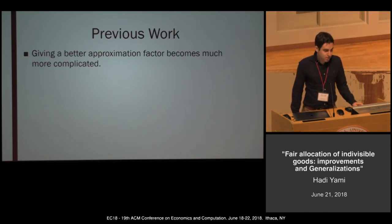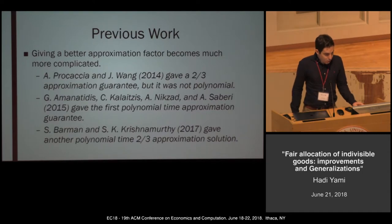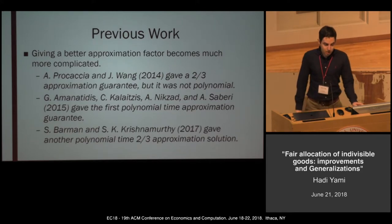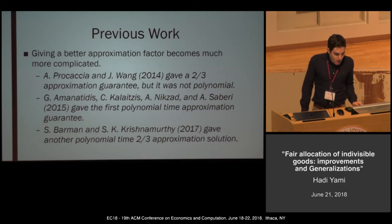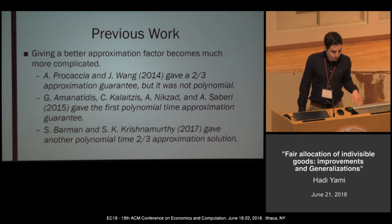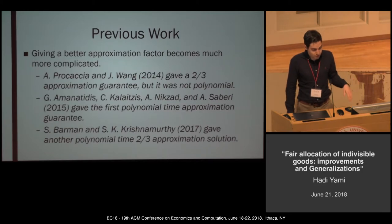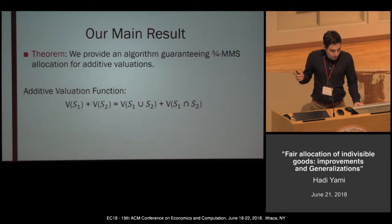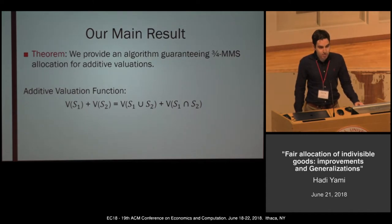Although one-half approximation is straightforward, achieving better guarantees is much harder. Procaccia and Wang in 2014 gave the first two-thirds approximation guarantee, but it was existential, not polynomial time. Later in 2015, Amanatidis, Kaleitsis, Niksa, and Salberi gave the first polynomial-time two-thirds MMS algorithm. In 2017, Barman and Krishnamurti gave another polynomial-time two-thirds approximation and also generalized the problem. In this paper, our main result is improving the guarantee from two-thirds to three-quarters for additive valuation functions.